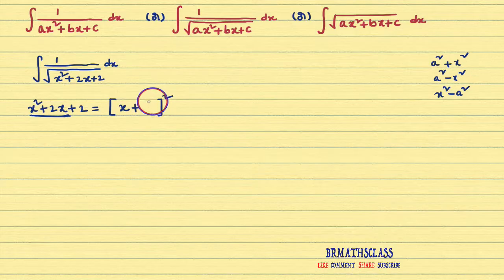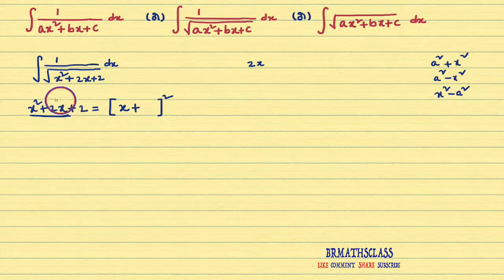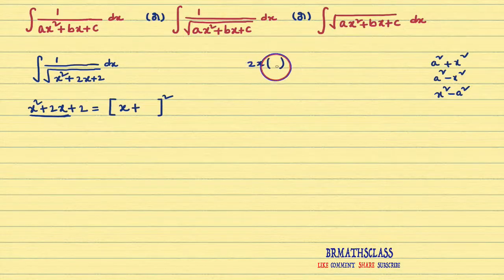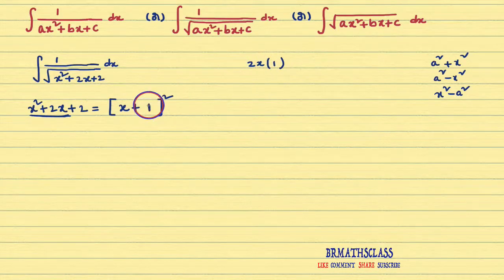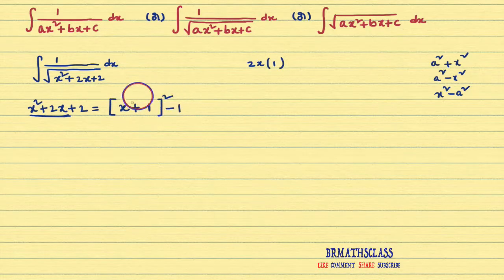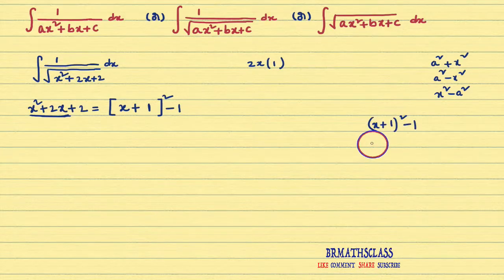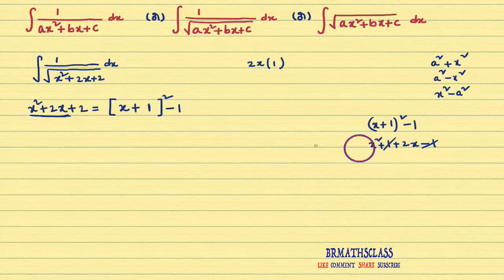Now you need to find the number inside the bracket. How? Always keep 2x in your mind, irrespective of what is present. Here 2x is present. You need to find some number such that 2x multiplied by that number gives 2x. That number is 1 — because 2x × 1 = 2x. So we identified that number as 1. Then we subtract the square of that number: 1² = 1. If you expand (x + 1)² − 1, you get x² + 2x + 1 − 1 = x² + 2x. That checks out.